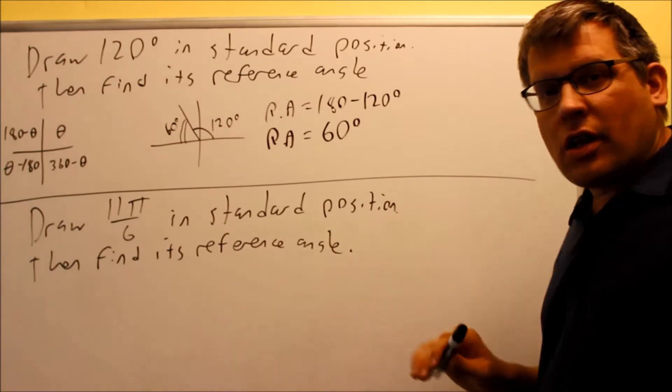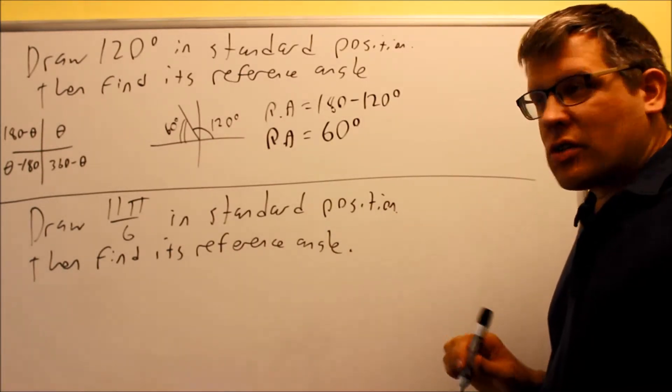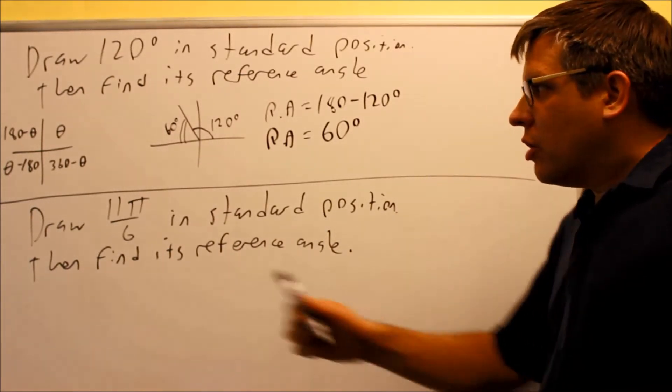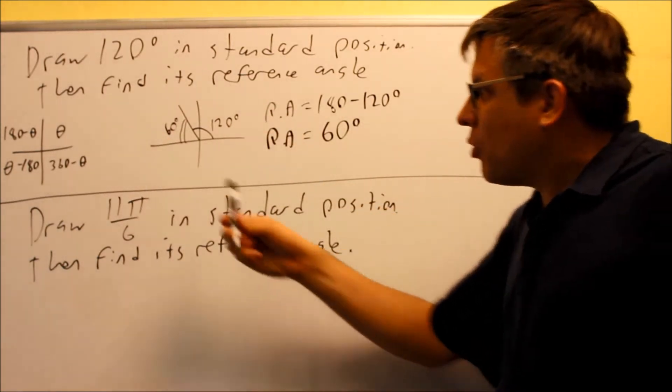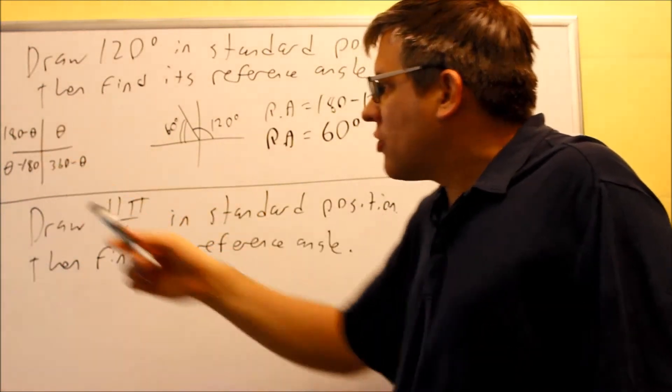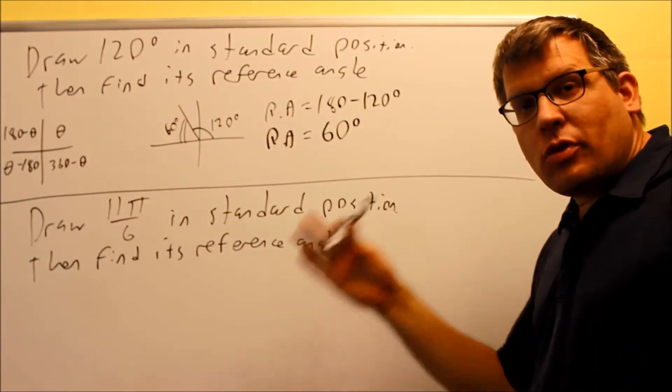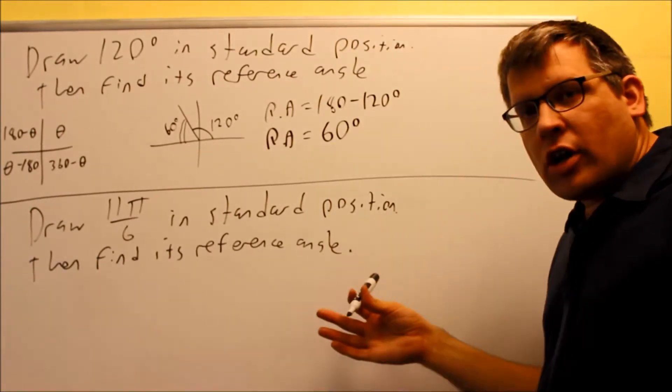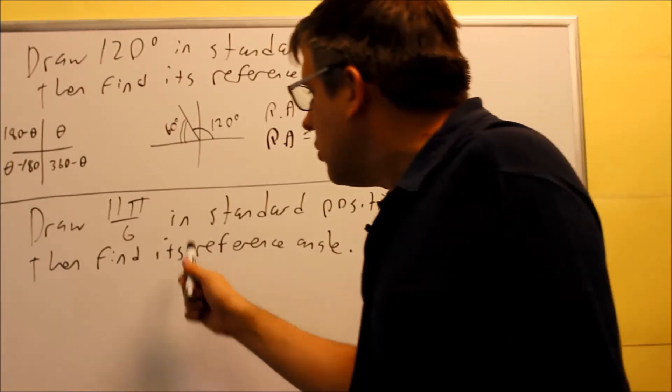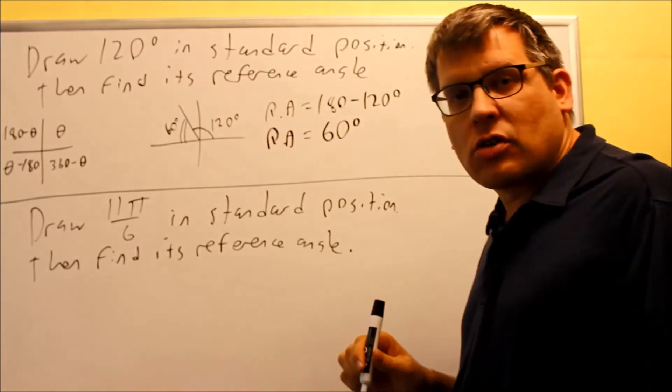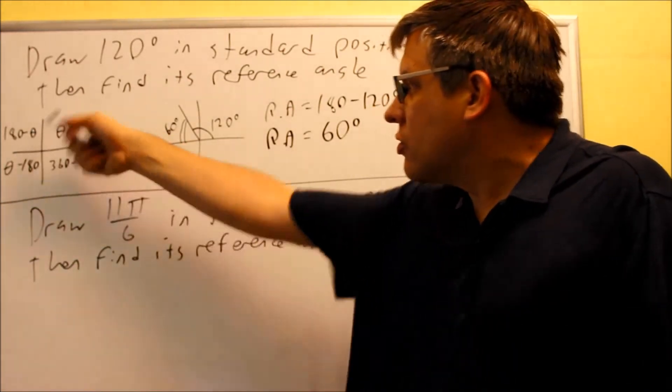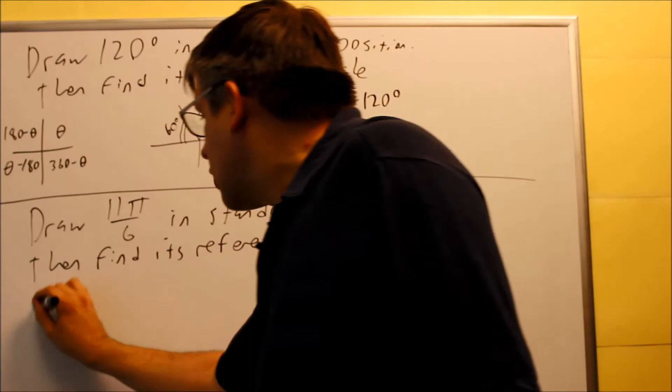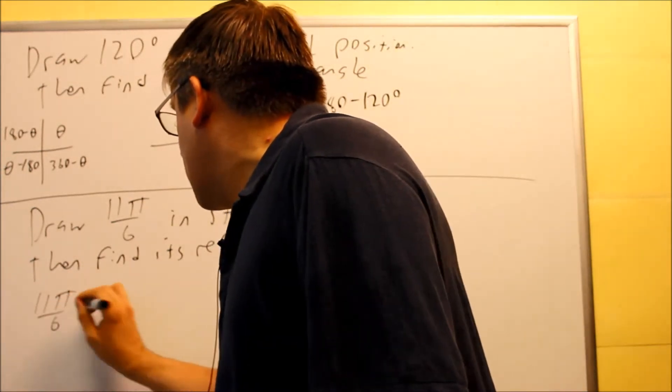Let's now take a look at this one, 11 pi over 6. Now, we could do this one, in the previous example we had these formulas written in terms of radians, and we did it all in radians. If you don't want to do that, then another method that you can do is change this over into degrees first. Once it's in degrees, then you can refer to those formulas.